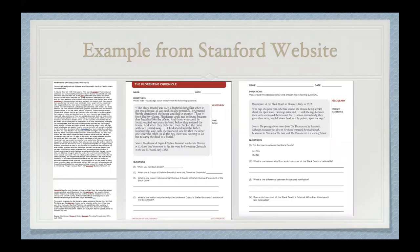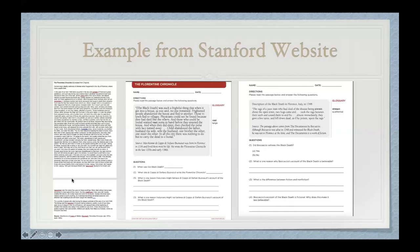Here's one example from the Stanford website showing how primary source analysis can be approached. This is the module on the Black Death in Florence. You have the online document available to upload, along with close questions. The most important questions on the side ask: is the source believable? What is the difference between fiction and non-fiction? Is a fictional book actually a good history source? What makes it less believable? These are examples of the source collections the Stanford website offers.